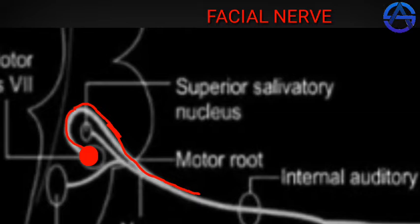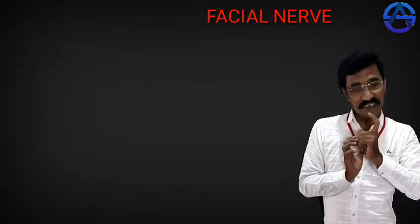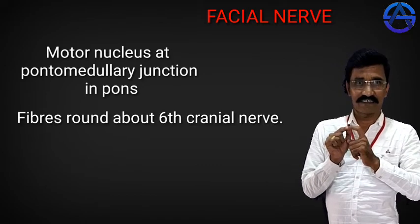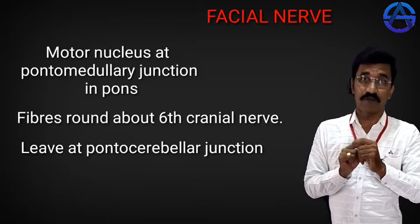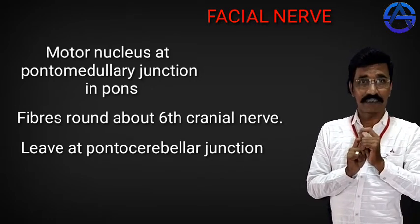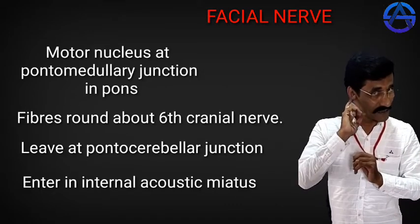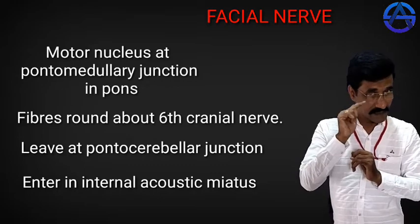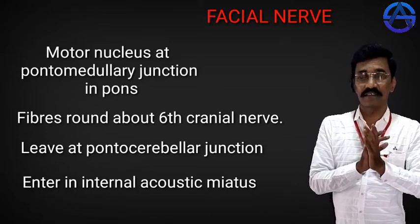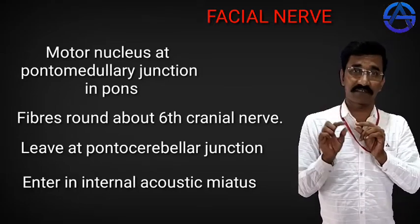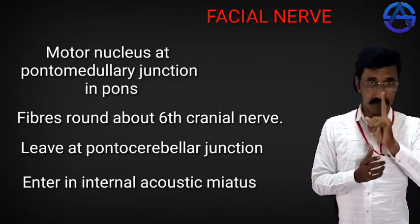At the pontomedullary junction, the fibers pass out. Just as the external acoustic meatus is an opening, similarly behind and medial to the middle ear there is a meatus and a canal — the internal acoustic meatus — and the motor fibers enter through it.